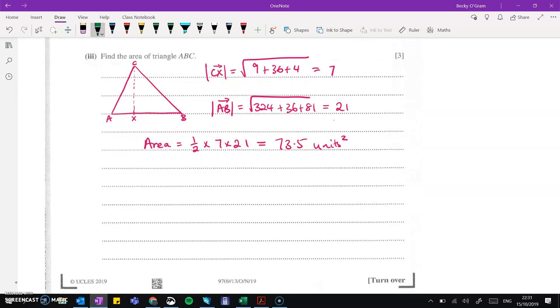Then we want to find the area of triangle a, b, c. Now we're told that cx is perpendicular to ax, and ab is on a straight line.